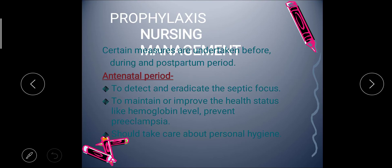For nursing management, certain measures are undertaken before and during the postpartum period to prevent infection. During the antenatal period, we detect and eradicate any septic focus — we check how they maintain hygiene, health history, nutrition, and diet. We take care to maintain or improve health status, such as hemoglobin level, and prevent pre-eclampsia. We ask the patient to take iron supplements and folic acid supplements to maintain proper hemoglobin levels.